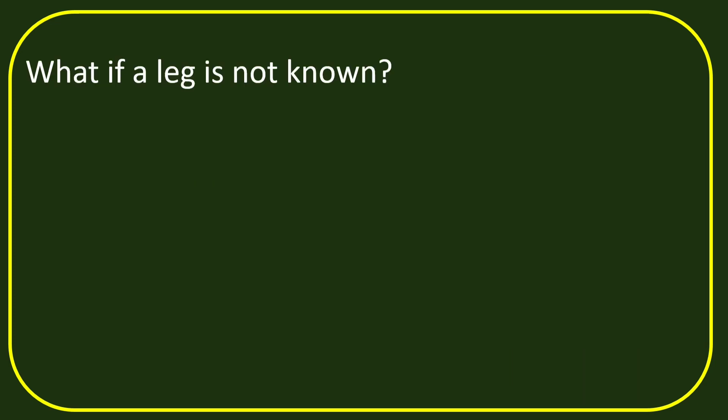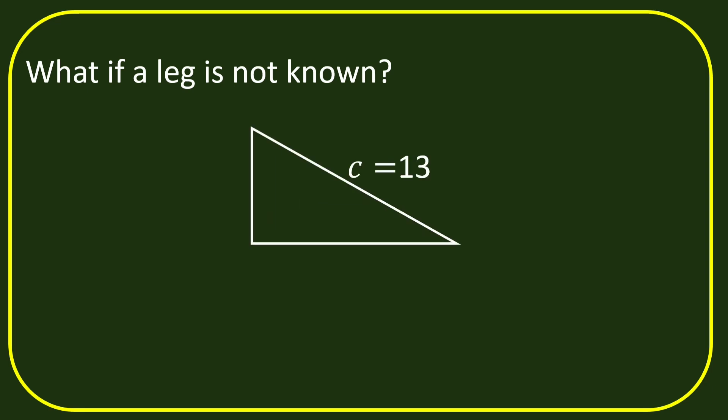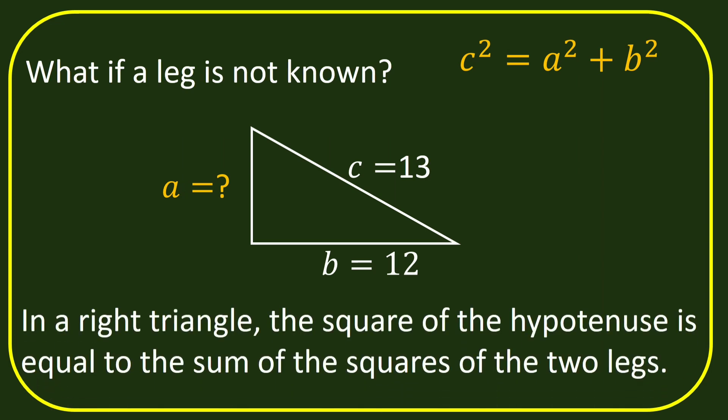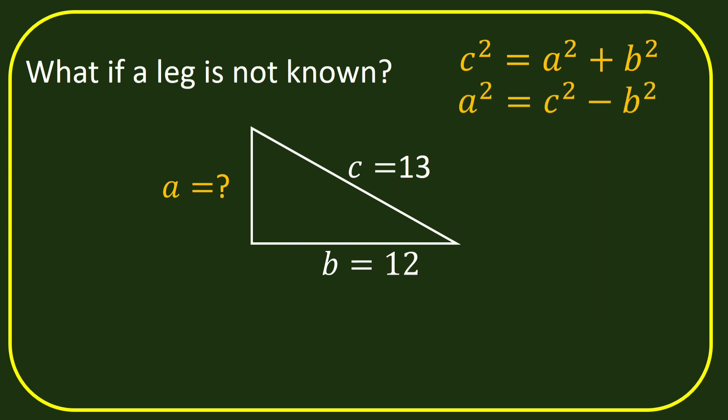Aside from the hypotenuse, what if any of the legs is unknown? We can find it using the same formula. We have a is unknown, b is 12, and c is 13. We are going to find a. We will use the same formula: c squared equals to a squared plus b squared. And since a is unknown, we can rearrange to get a squared is equal to c squared minus b squared. Substituting the values of b and c, we have a squared is equal to 13 squared minus 12 squared.